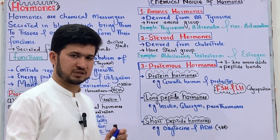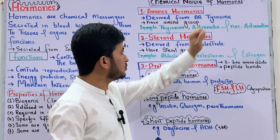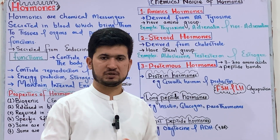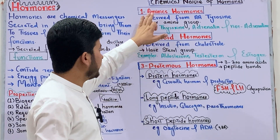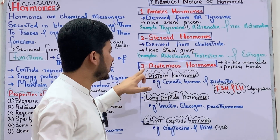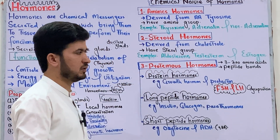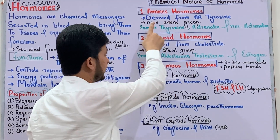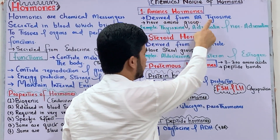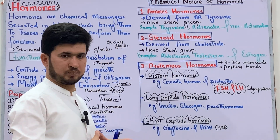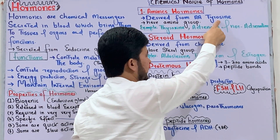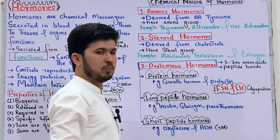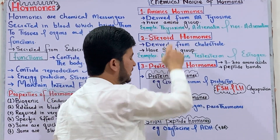Now let us discuss the chemical nature of hormones. The chemical nature of hormones is of three types: amino hormones, steroid hormones, and proteinous hormones. The first type is amino hormones — these are hormones derived from the amino acid tyrosine.